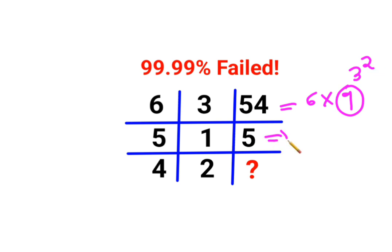And here also I can say 5 multiplied by 1, or 1 square also gets you 5. So here the next number should be 4 multiplied by 2 square, that is 4 into 4. The answer for this one is 16.